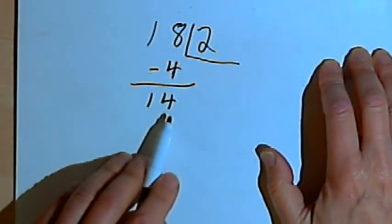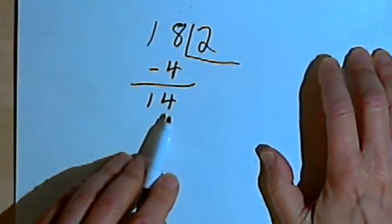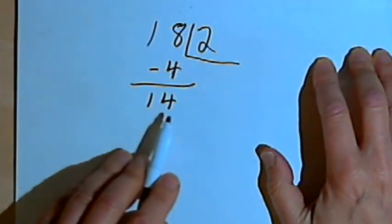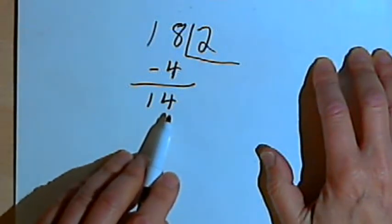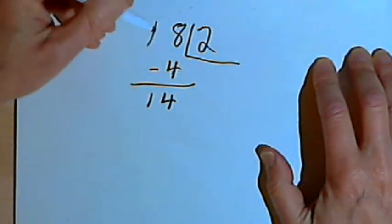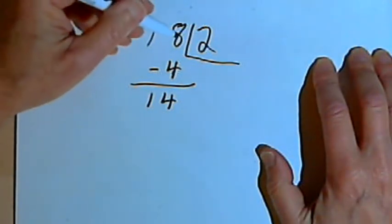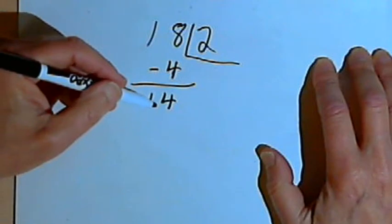So 14 is 2 times 7, so it's divisible by 7, which means 182 is divisible by 7.